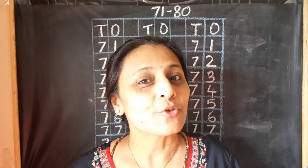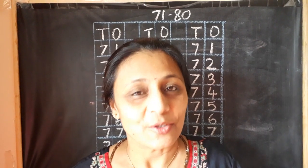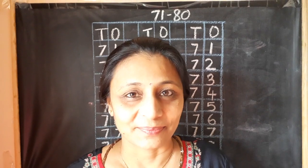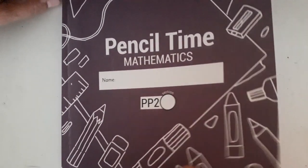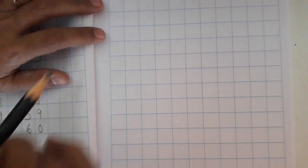This way we are going to write numbers 71 to 80 in our notebook. So, children, are we ready to open your maths notebook? Let's start. Children, open pencil time mathematics. Now here we are going to first of all write 71 to 80 as heading.